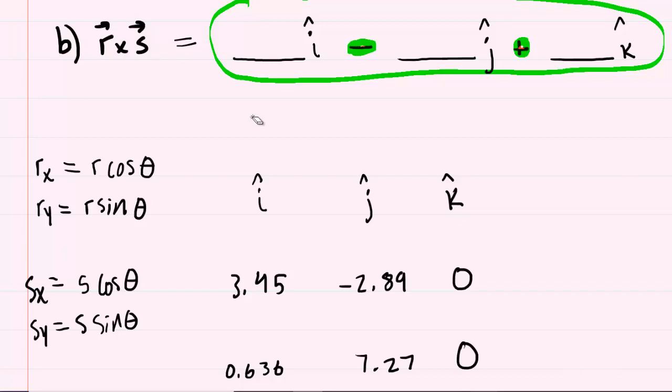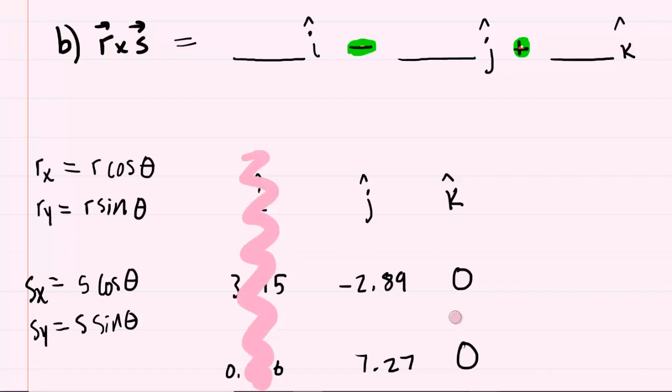Here's how it works. For the space in front of i-hat, you're going to lightly cross off the i-hat direction. And then with what remains, this sort of two by two matrix, you're going to do what is called the determinant, which involves cross-multiplying. So you're going to have negative 2.89 times zero, and then subtract 7.27 times zero. Hopefully we realize that this entire result will just equal zero, because you're going to end up with zero minus zero. So that means that this first blank space will have a value of just zero.